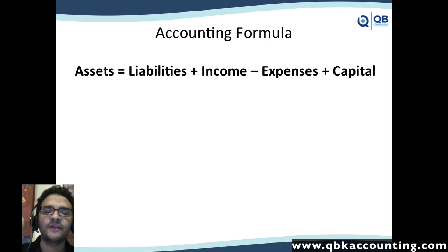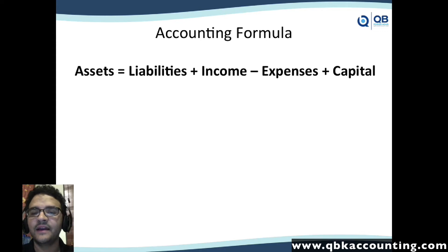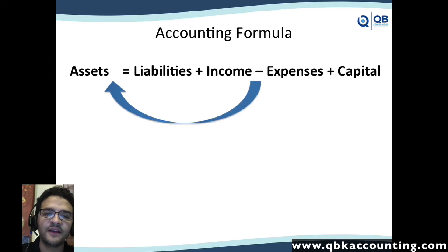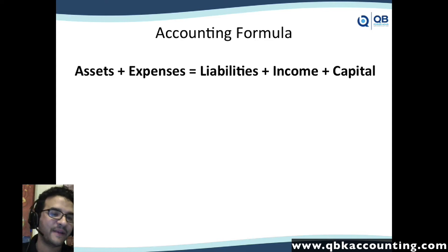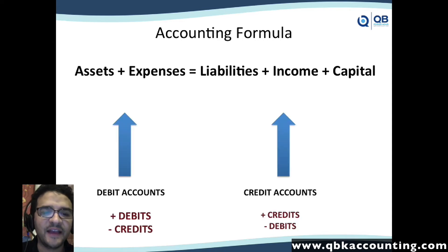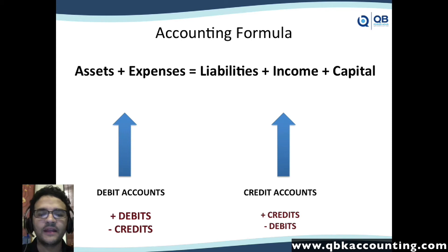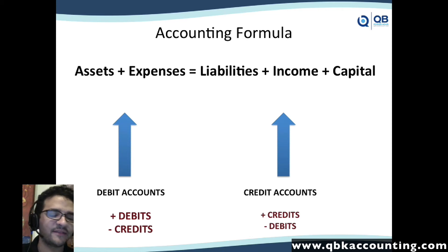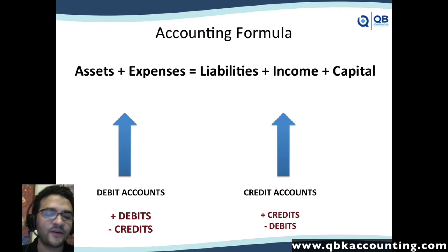If we do a little math, you know that you can move anything across the equal sign from the left to the right simply by changing the sign. So if I move the negative expenses to the left, it turns into a positive. Now it's: expenses plus assets equals liabilities plus income plus capital. The reason I did this exercise is to give you the ultimate debit and credit cheat sheet: assets and expenses are debit accounts — they increase with debits and decrease with credits. Liabilities, income, and capital are credit accounts — they increase through credits and decrease through debits.